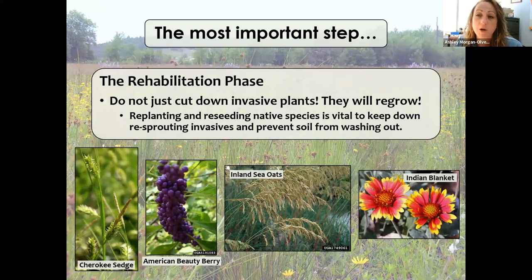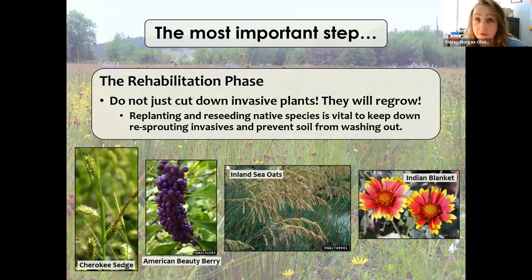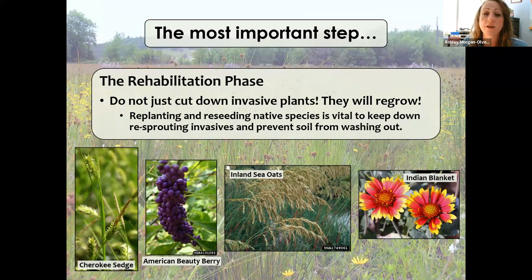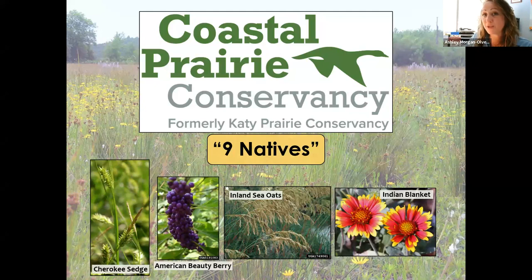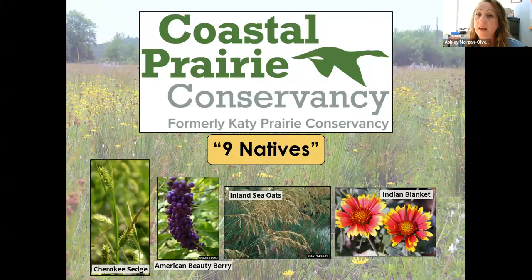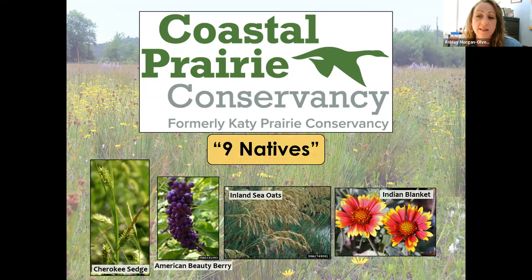The rehabilitation phase is the most important. If you just cut it down and don't put anything in its place, they will regrow — many have seed banks that last for years. One chinaberry tree will produce a hundred thousand seeds in one season. Remember you have great resources at your fingertips — like the Nine Natives, which highlights native species great for full sun or shade, such as Cherokee sedge, American beautyberries, inland sea oats, and Indian blanket. You can also check our website for native alternatives.